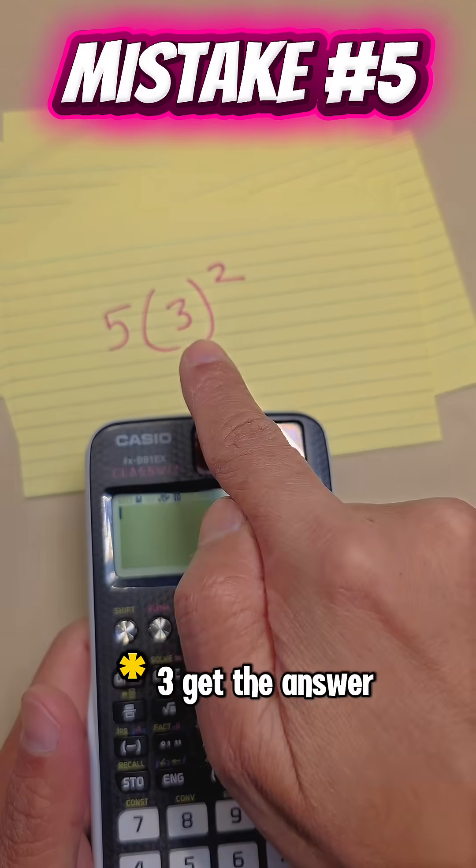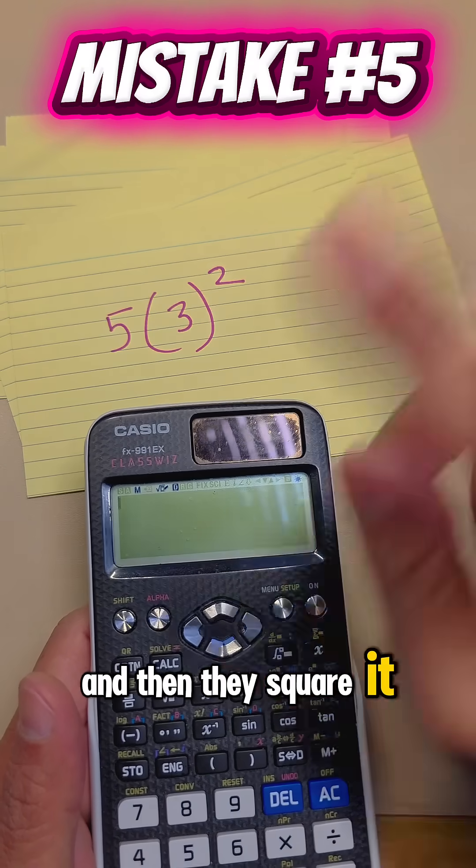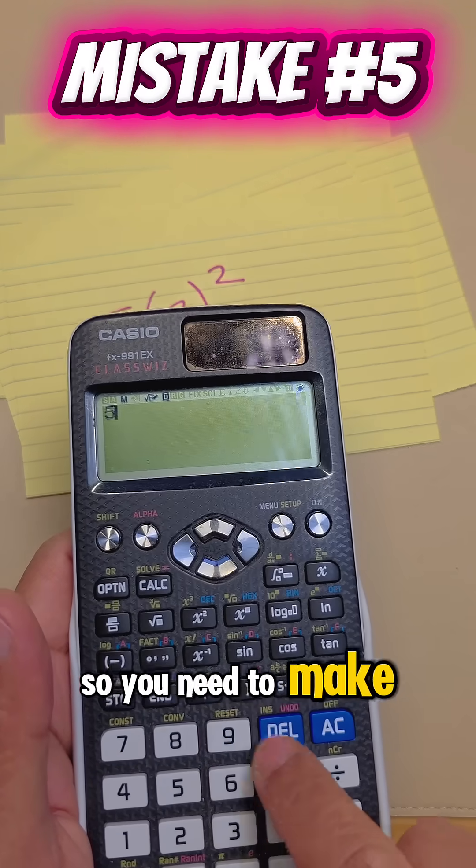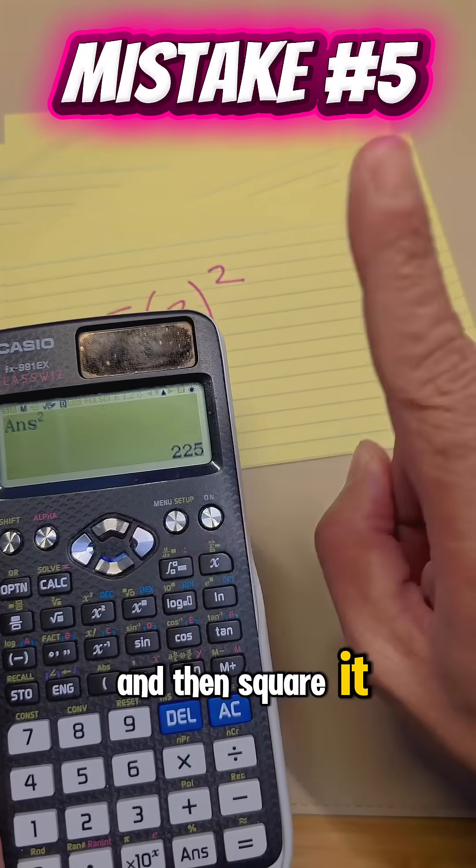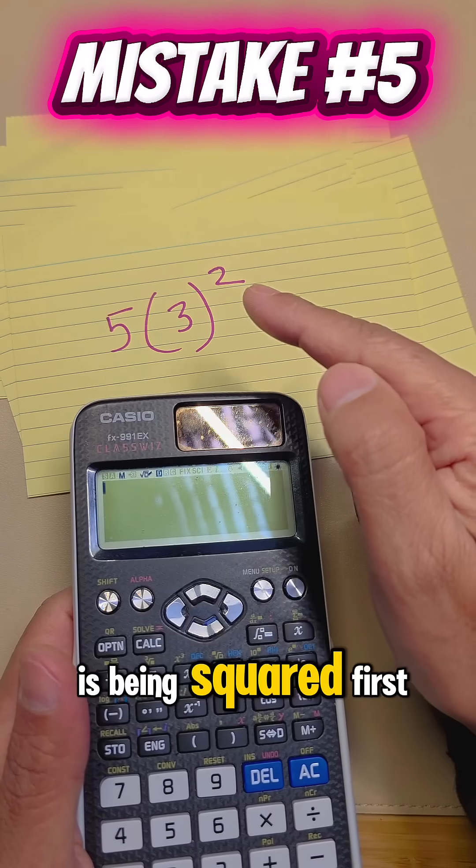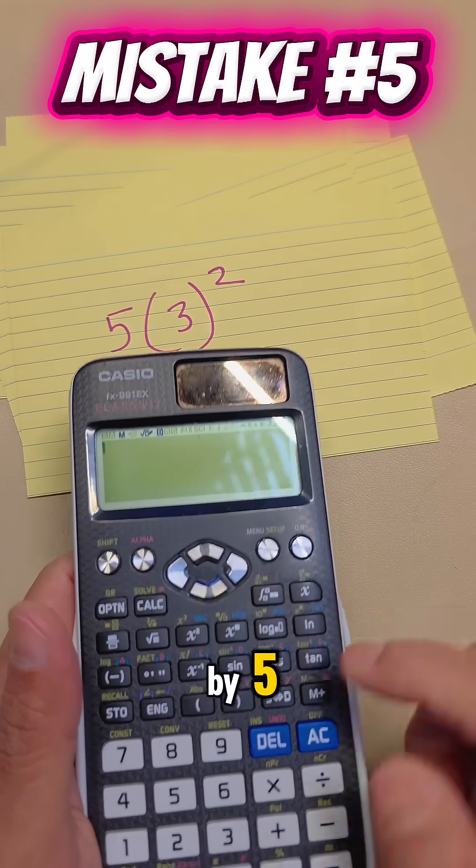What I see students often do is they do 5 times 3, get the answer, and then they square it, which is wrong. So you need to make sure you don't do that. You don't do 5 times 3, get the answer 15, and then square it. This is wrong. This 3 has been squared first and then after that, times by 5.